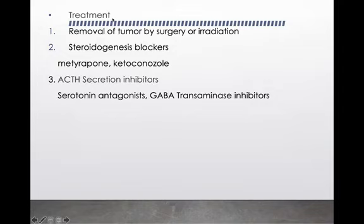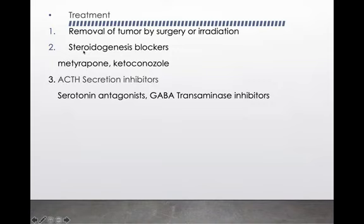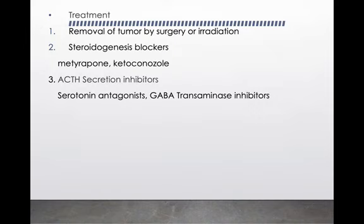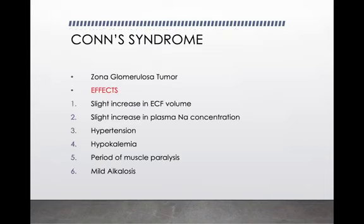Treatment of Cushing syndrome involves first removing the cause — whether a tumor of the hypothalamus, pituitary, or adrenal cortex — by surgery or radiation. The second approach is steroidogenesis blockers such as metyrapone and ketoconazole, which inhibit steroid hormone synthesis. If there is a problem with ACTH secretion, secretion inhibitors such as serotonin antagonists and GABA-transaminase inhibitors can be used.